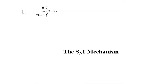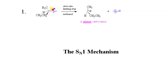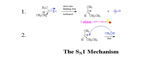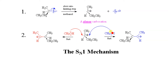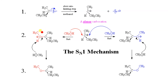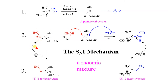In the mechanism, first there is an alkyl bromide. In the slow step, the C–Br bond breaks: carbocation forms here and bromine minus leaves. This is a planar carbocation — sp2 hybridized, so planar. Since it is planar, attack can be from the front as well as from the back.